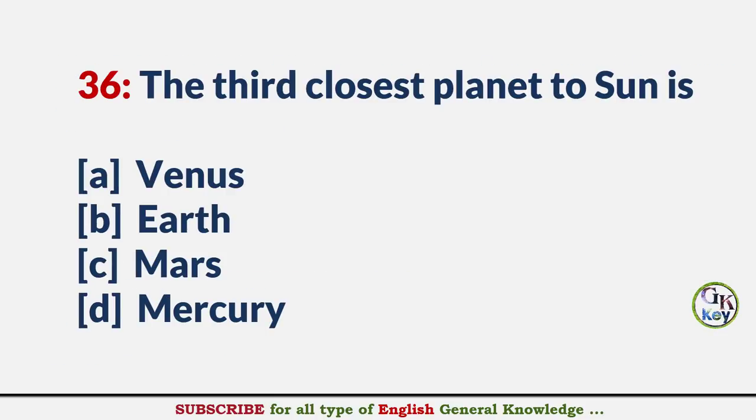The third closest planet to the sun is? Answer B: Earth.